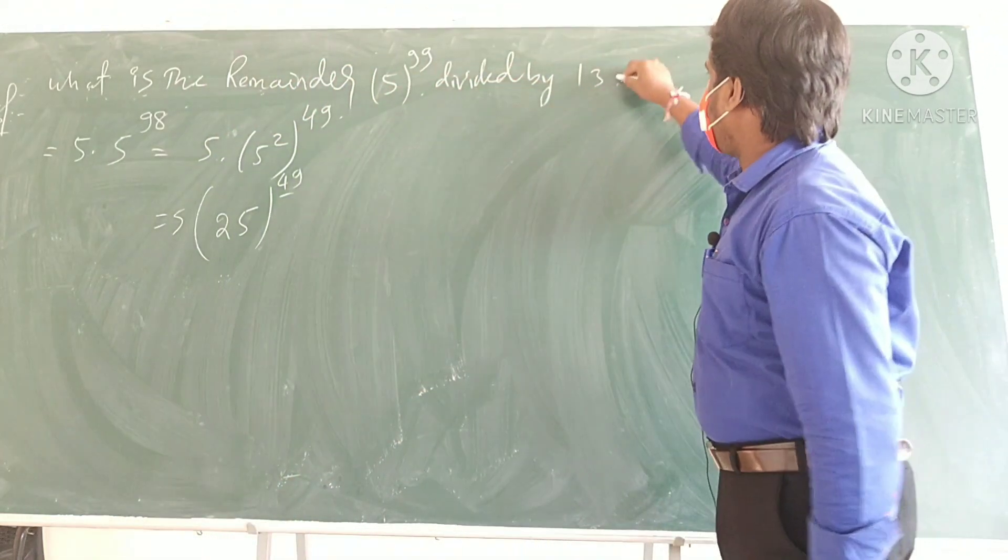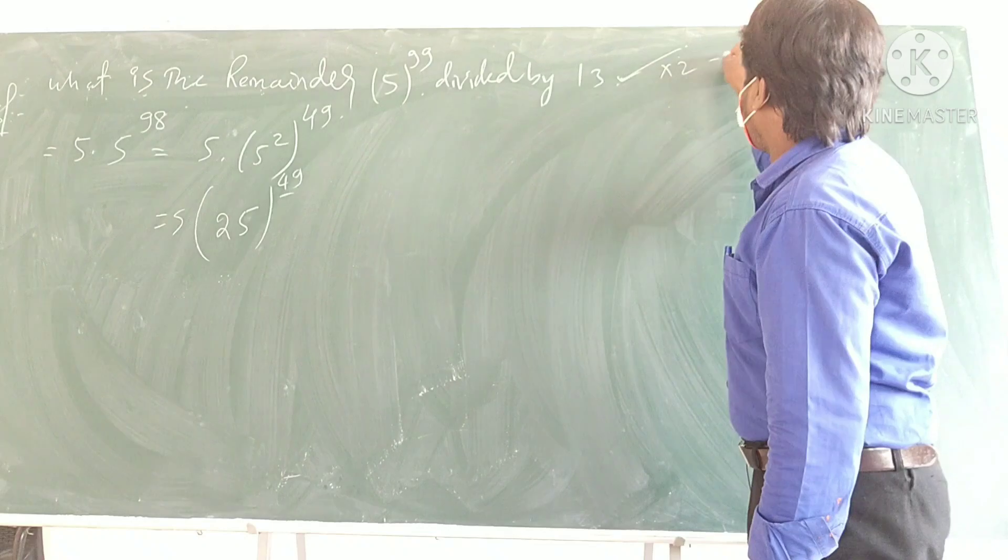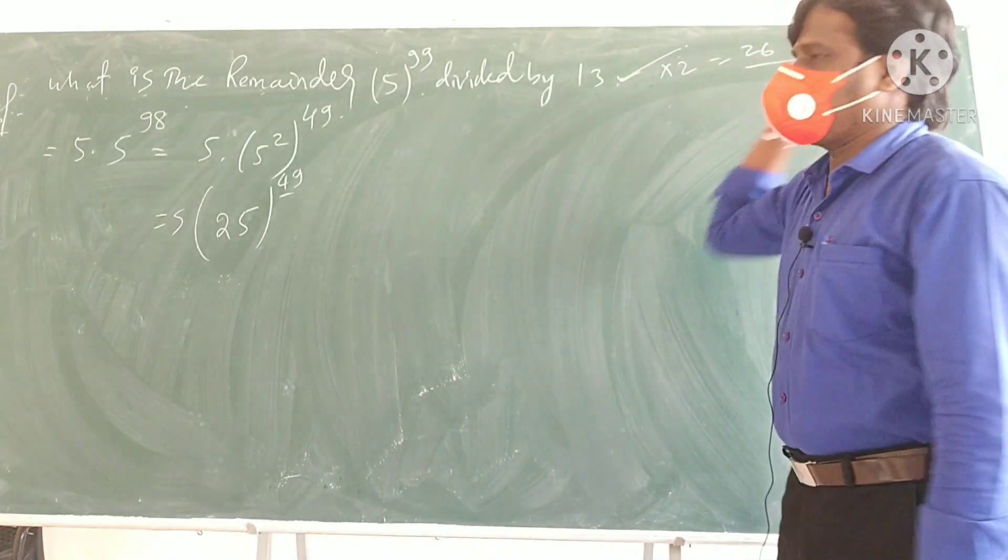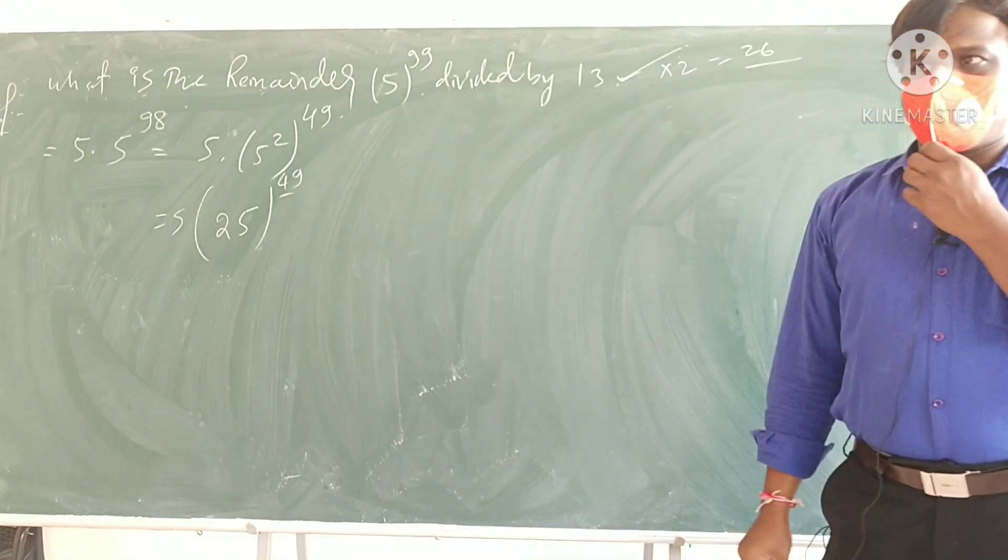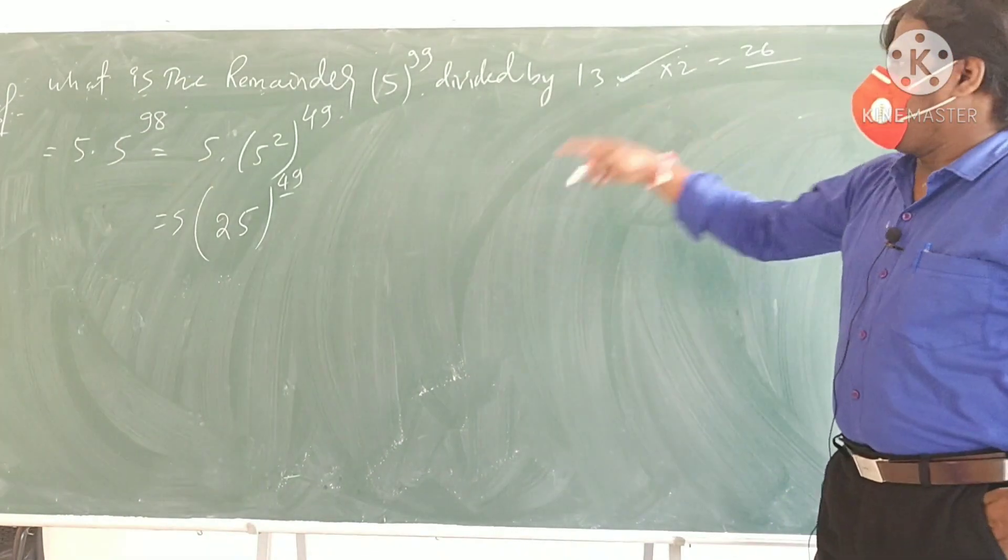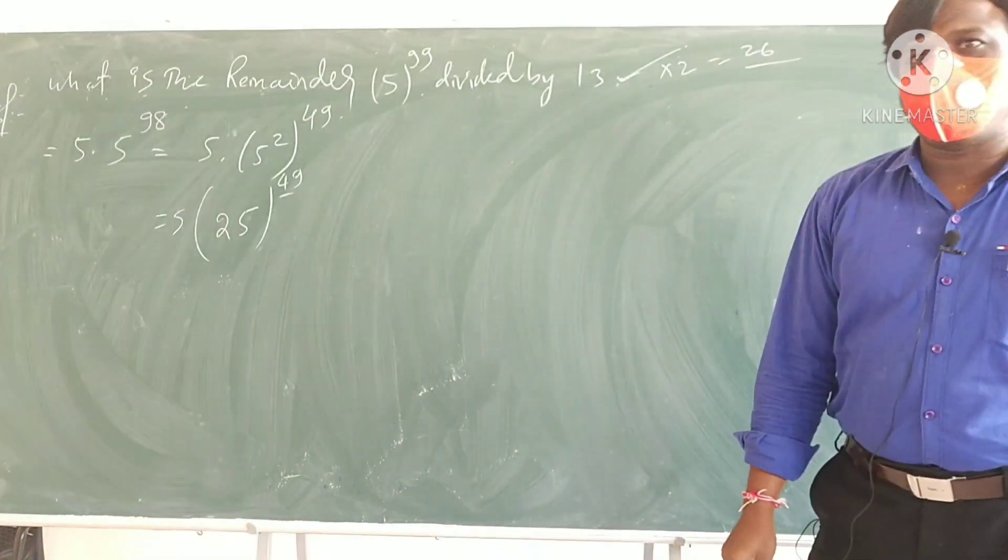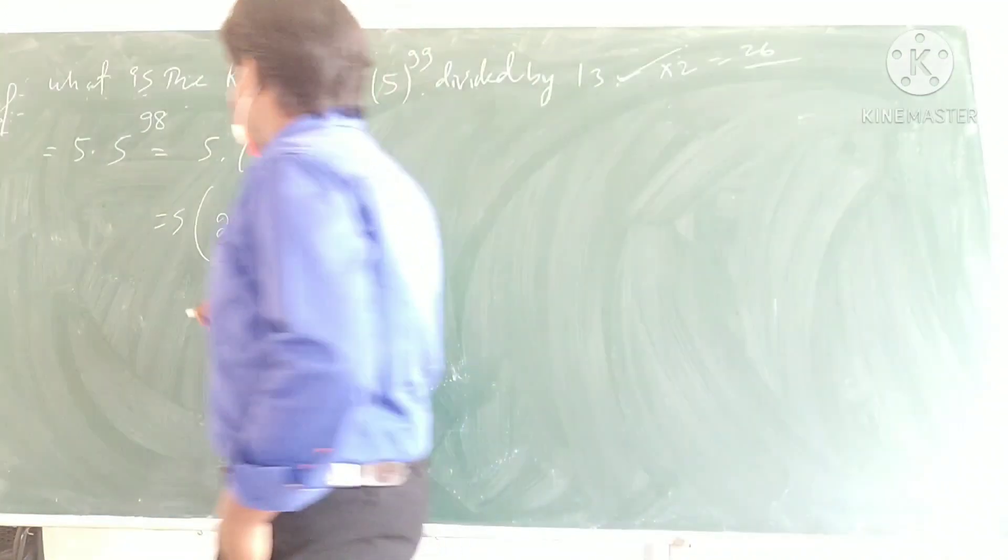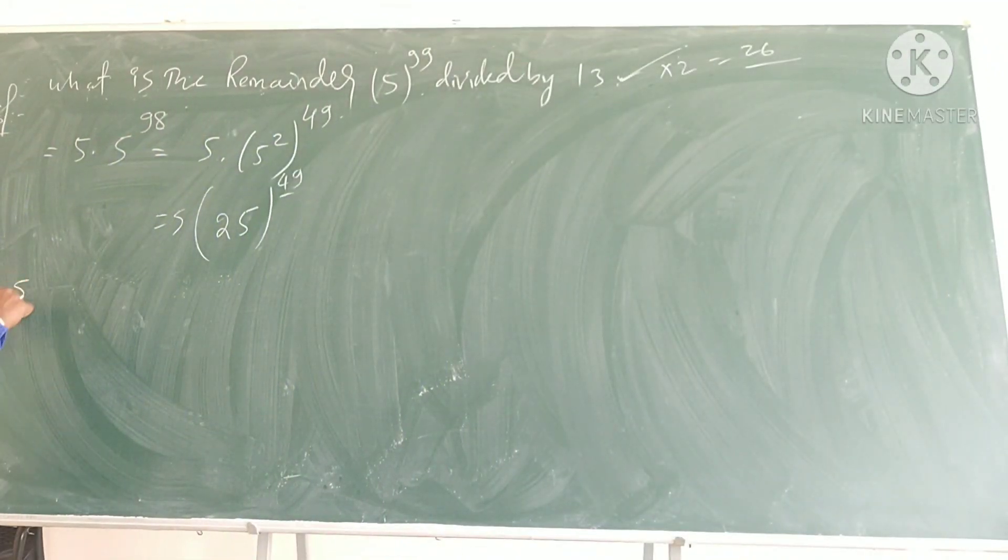So 13 combination, 13 into 2 how much? 26. So that is the idea. So what do you do here? Okay, this 25 can be written as 26 minus 1. So I can write this is equal to 5 into 26 minus 1 to the power of 49, right.